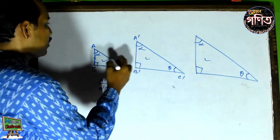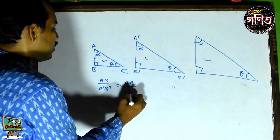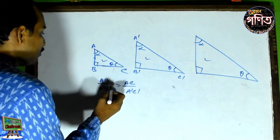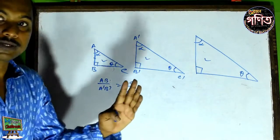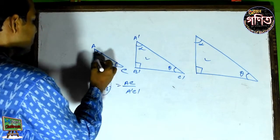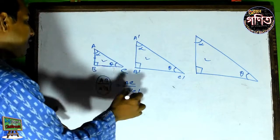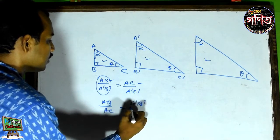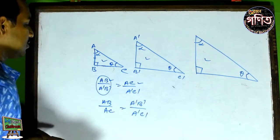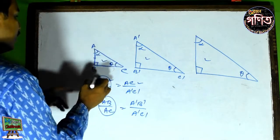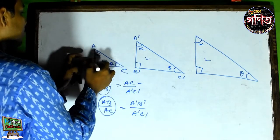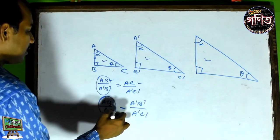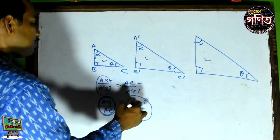Let's take a look at AC by A'C'. Now let's take a look at AB by AC. Now let's take a look at AC by AC. AB by AC. So A'B' by A'C'. Now let's take a look at AC by AC. Now, these are A'B'C'.